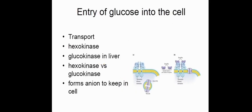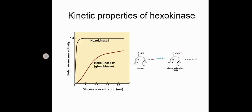GLUT transporters bind glucose at the extracellular side and transport it to the intracellular side. Regarding hexokinase kinetics: there are different types — hexokinase 1 and hexokinase 4. Hexokinase 4 responds as glucose concentration increases, but hexokinase 1 has the highest relative enzyme activity and responds quickly.